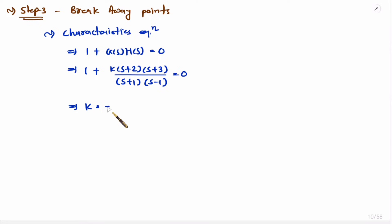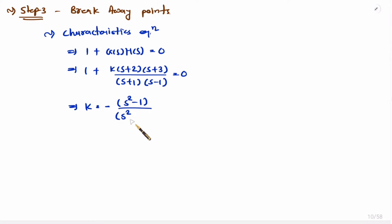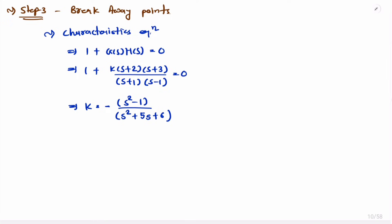Substituting into the characteristic equation and rearranging, we get k = -[(s+1)(s-1)] / [(s+2)(s+3)]. The numerator (s+1)(s-1) = s² - 1. The denominator (s+2)(s+3) = s² + 5s + 6. To find the breakaway point, we differentiate k with respect to s and set dk/ds = 0.